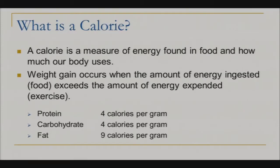Remember, for protein there are 4 calories per gram. Carbohydrates is 4 calories per gram. And fat is 9 calories per gram.